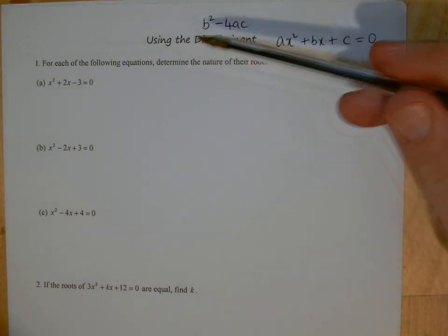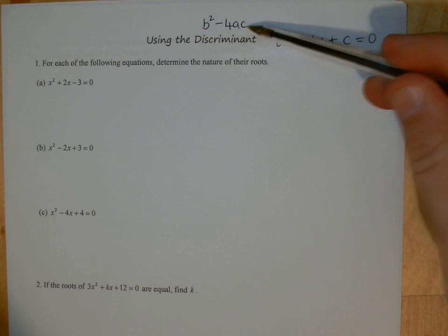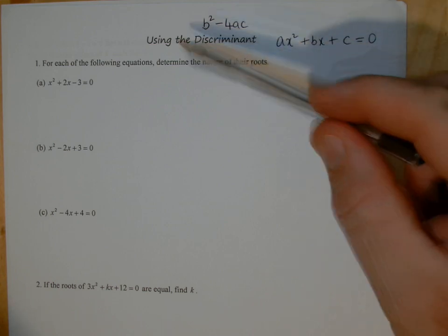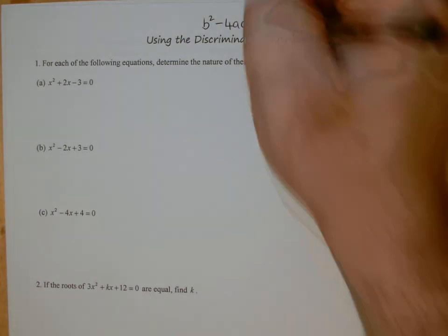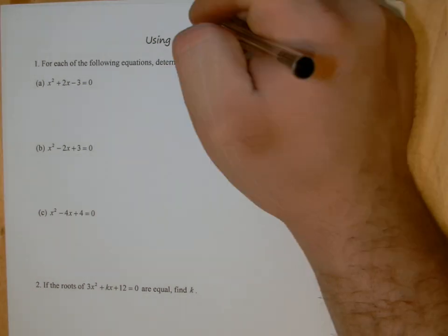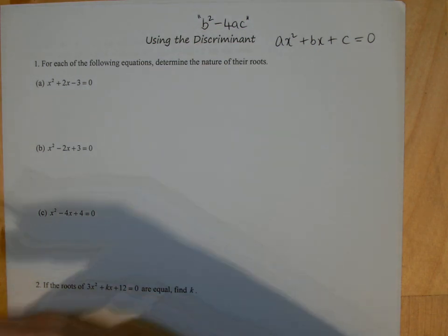Okay, so let's just remind ourselves about the discriminant. It's this value, b squared minus 4ac, which of course is underneath the square root in the quadratic formula. So all we've got to do is look at this value for any quadratic and we can determine the nature of its roots.